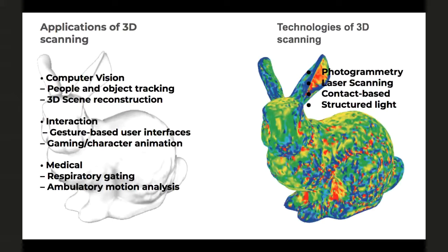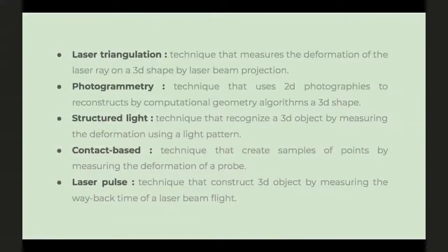Each of the technologies has its own limitations. There are four kinds of different scanning techniques: photogrammetry, laser scanning, contact-based scanning, and structured light scanning. Laser triangulation measures the deformation of the laser ray on a 3D shape — we project with laser, measure the distance and deformation, triangulate to place the point. Photogrammetry takes many pictures around the object and puts them together to reconstruct the 3D scene. This needs a lot of computational power, so if your computer is not powerful, photogrammetry may be very heavy.